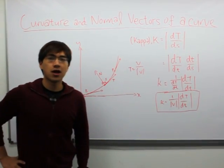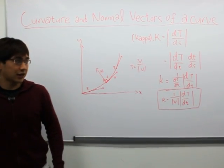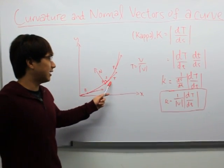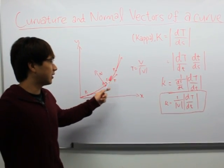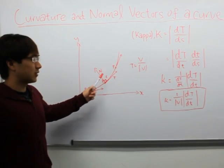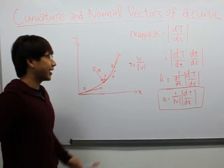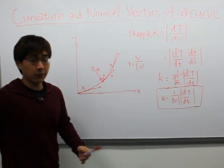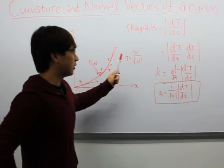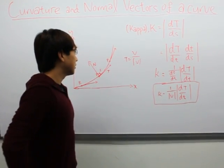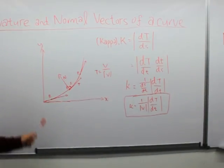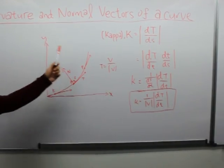So what is curvature? Curvature is actually the rate at which the unit tangent vector turns per unit s, which is the arc length. As you previously learned, T is actually equal to V over the magnitude of V. So by using this information, we can find the curvature of the curve.